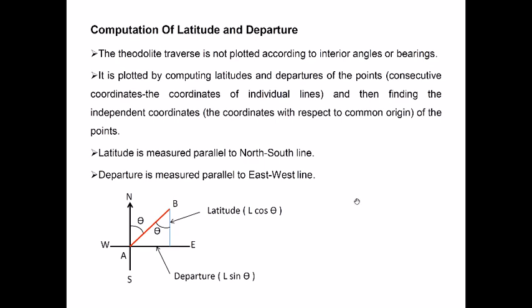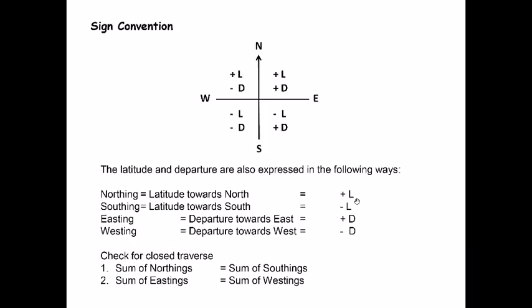The error is balanced across all survey lines, usually based on their distances or lengths. For that, we'll use two new terms: independent coordinates and consecutive coordinates, which I'll get to in just a bit. But first, let's see the sign convention once again. Latitude is positive in the north and negative in the south. Departure is positive in the east and negative in the west. Combined, you get the sign for latitude and departure. If you're using azimuths, you get them automatically; if you're using bearings, you have to apply your own sign with the value.